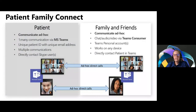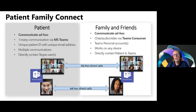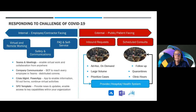The Patient and Family Connect feature allows patients in isolation to communicate with loved ones, reducing patient and family anxiety related to patient conditions. This was specifically highlighted during COVID because many patients were not allowed to see their family and had no access to them. This enabled one-to-many communication via Microsoft Teams — patients are given a unique ID and a unique email address and can directly contact their family and friends. In responding to the challenge of COVID-19, we looked at both internal — employer, employee, contractor — and external, patient-facing solutions.